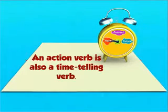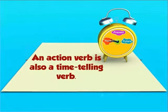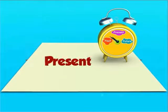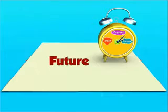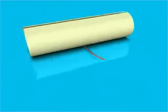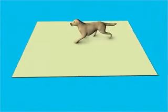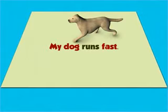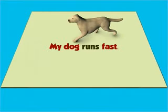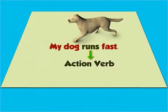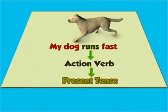An action verb is also a time-telling verb. It tells when an action takes place — in the present, in the future, or in the past. In the sentence 'My dog runs fast,' the word runs indicates that the action of running is happening in the present, so it is an action verb in the present tense.